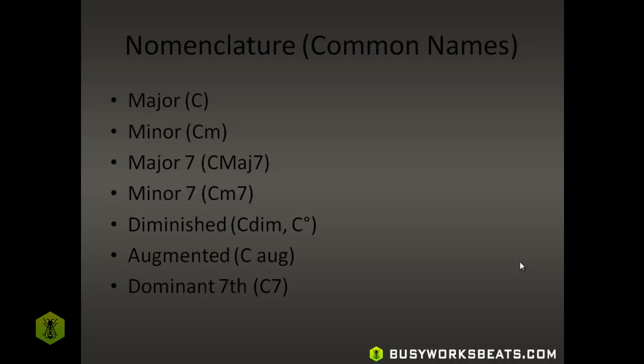Let's go through some nomenclature — common names you're going to hear a lot. The point of this is to teach you how to recognize different names and notation if you ever go to a website and read their music theory notation. When we use major chords, the way we write it is with the letter of the key: A, B, C, D, E, F, or G. A capital letter just means major. So when you're looking for chords online and you see just C, that means C major by default.